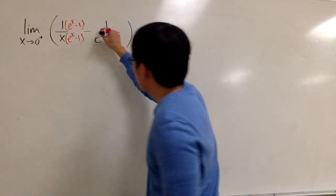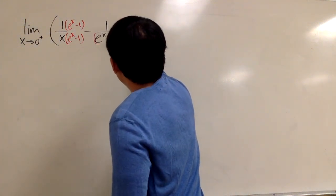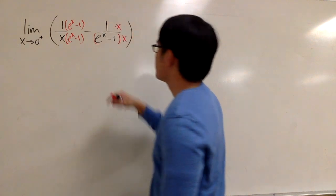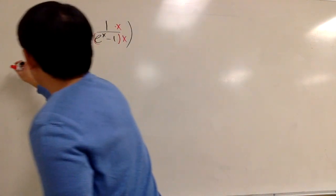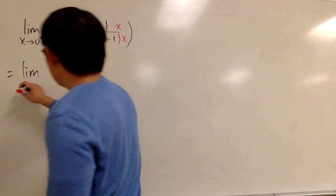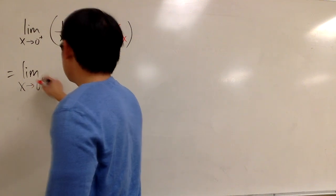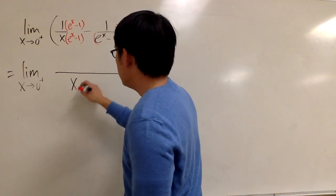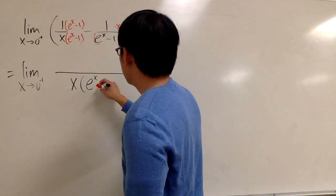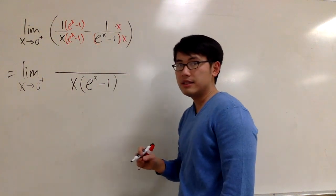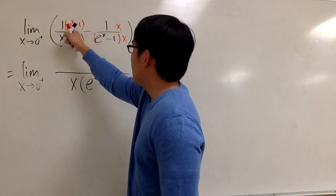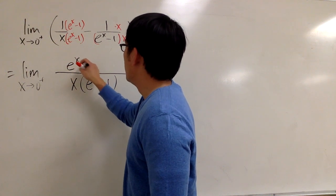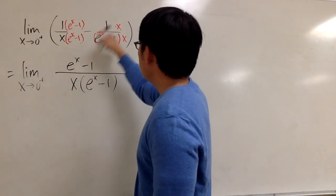And for this part, we will have to multiply by x on the bottom and also multiply that on the top. We now get the limit as x goes to 0 plus, with x times e to the x minus 1 in parentheses on the bottom. On the top, we will have e to the x minus 1 minus x.